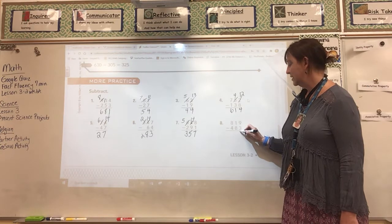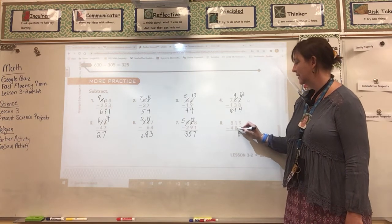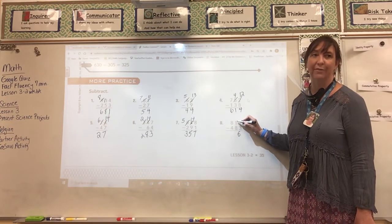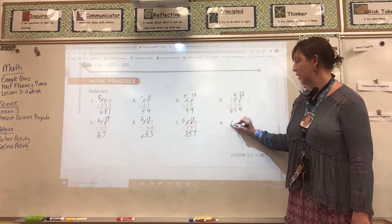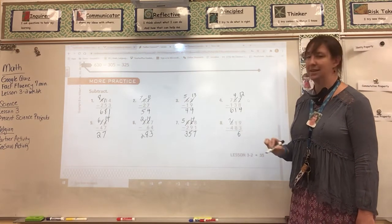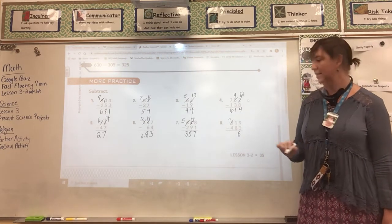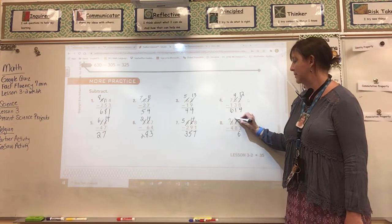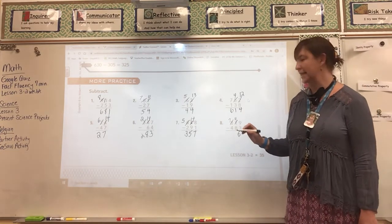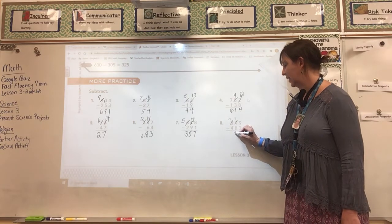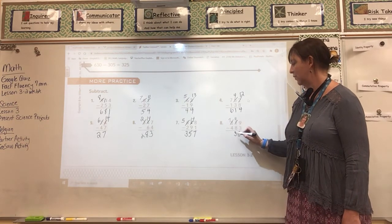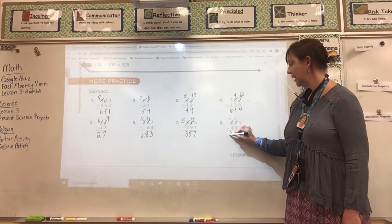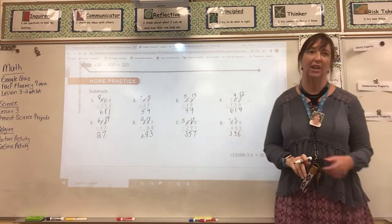9 minus 3 is 6. I can't subtract 8 from 1. So I have to borrow and regroup from the hundreds place. It becomes a 7. This 1 becomes an 11. 11 minus 8 is 3. And 7 minus 4 is 3. And so my answer is 336.